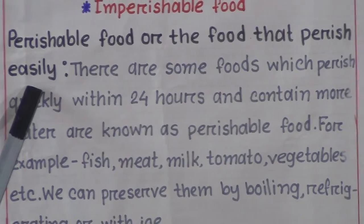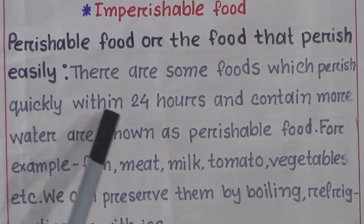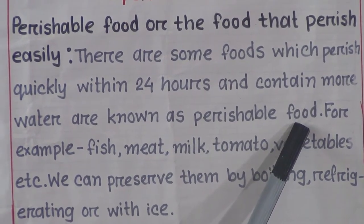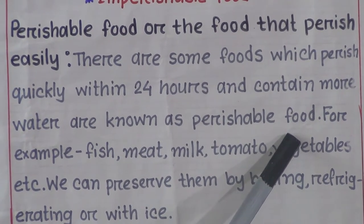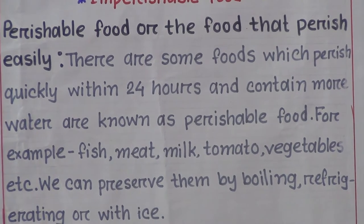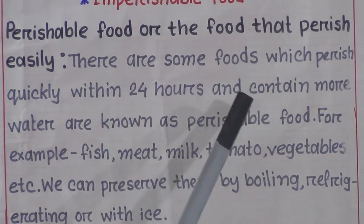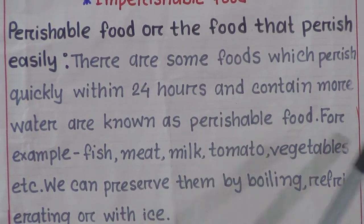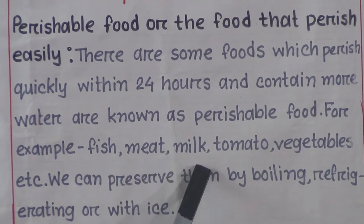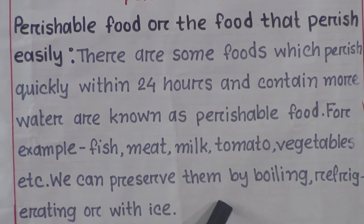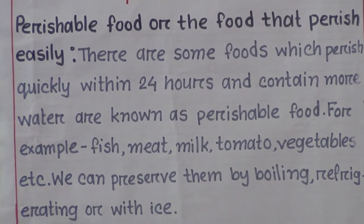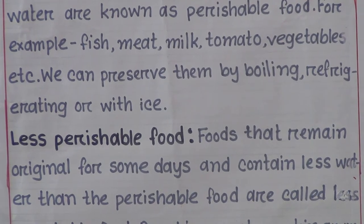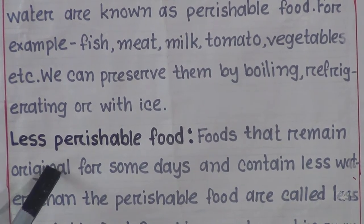Perishable foods are foods that perish quickly within 24 hours and contain more water. For example: fish, meat, milk, tomato, vegetables, etc. We can preserve them by boiling, refrigerating, and with ice. Through these ways we can preserve perishable foods like fish, meat, and milk.